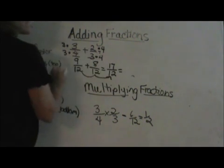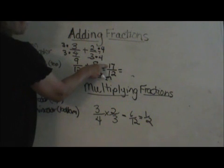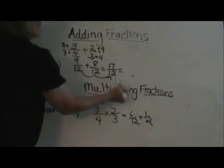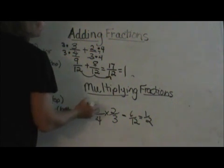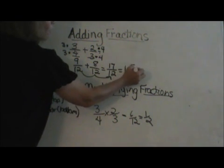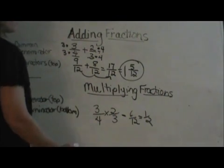And then that's an improper fraction because the top is what I call a wobble head. It's bigger than the bottom. So I have to make it unwobbled. And twelve goes into seventeen one full-time with five left over. So it's one and five-twelfths.